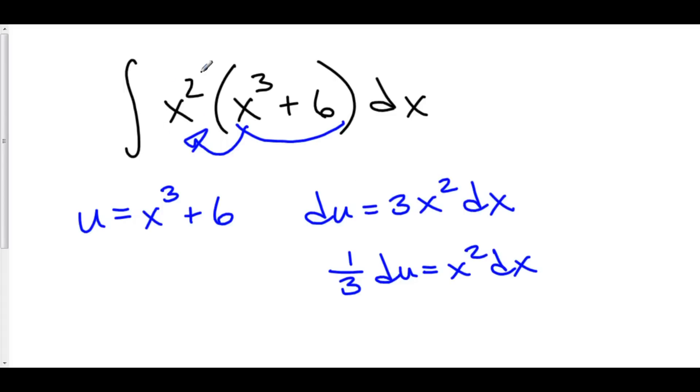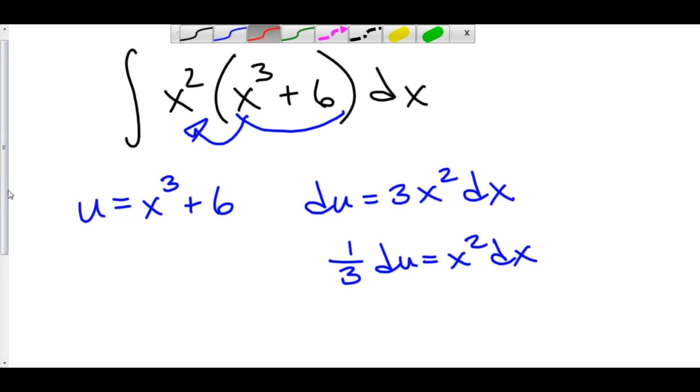That means I have 1 third du is equal to x squared dx. Hey, I can substitute x squared dx with 1 third du. And u is x to the third plus 6. Let's substitute those things in right now.